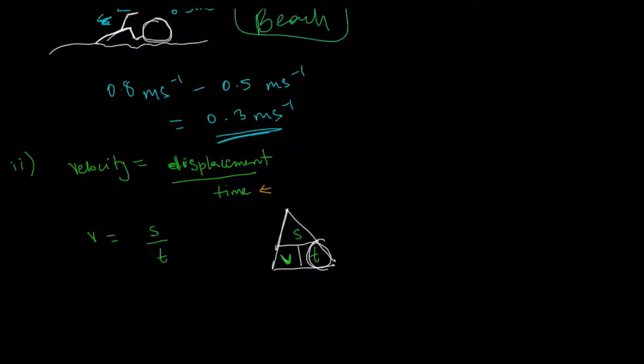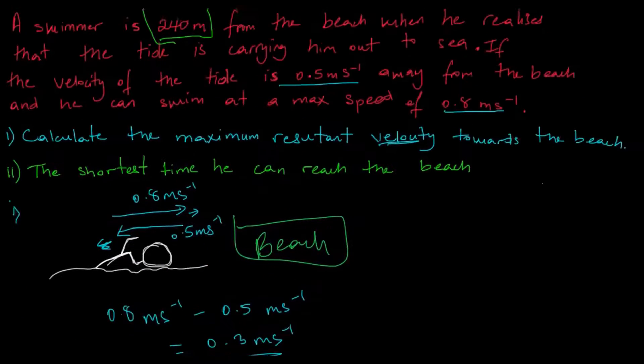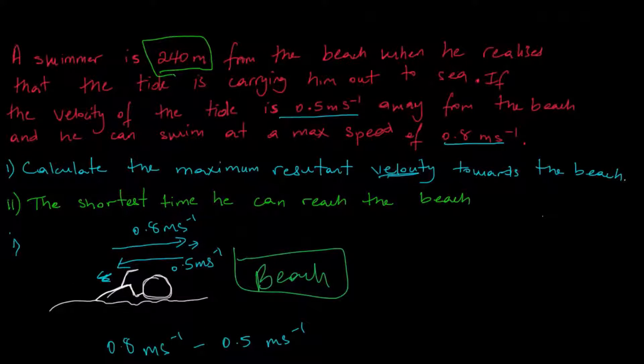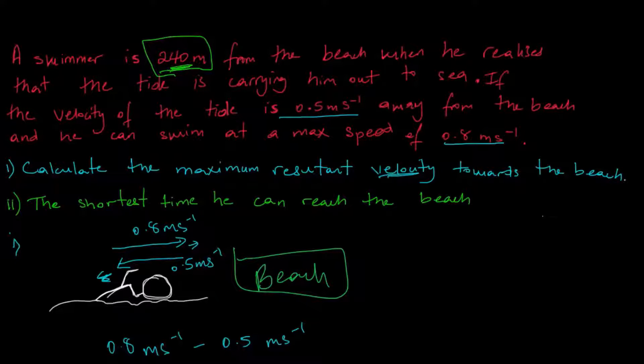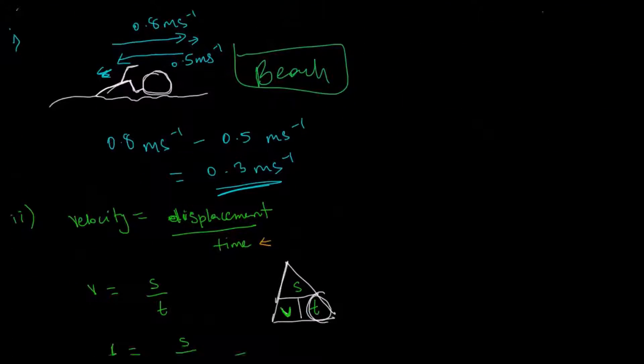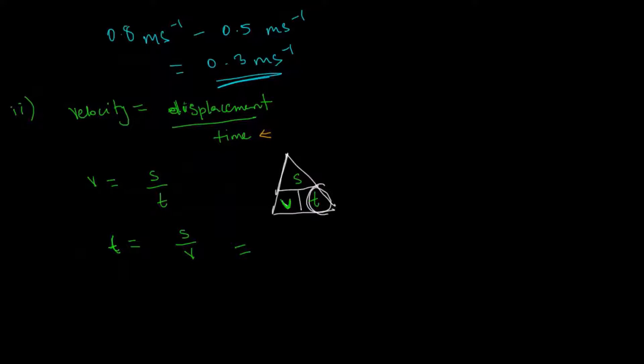So we write then that time, which we are interested in finding, is equal to displacement over velocity. So now we can substitute our value. So again, the distance or the displacement is 240 meters.